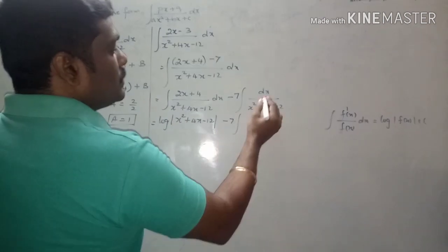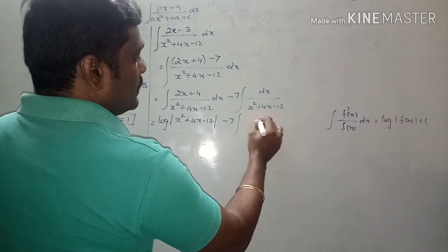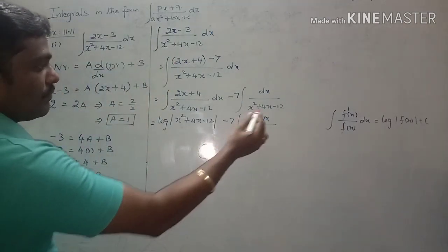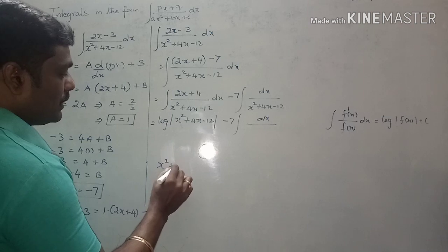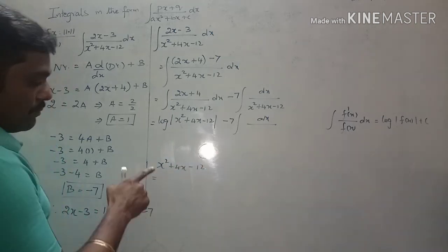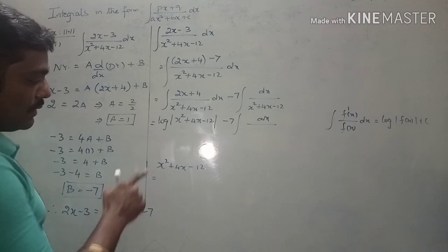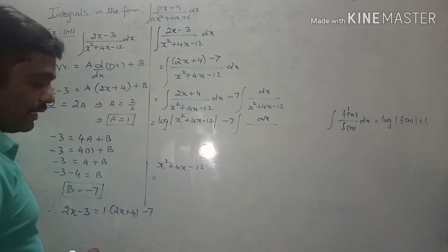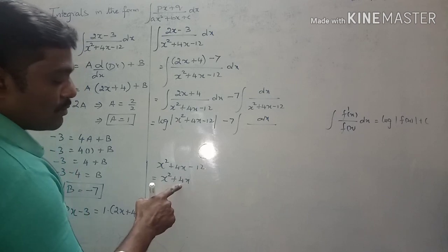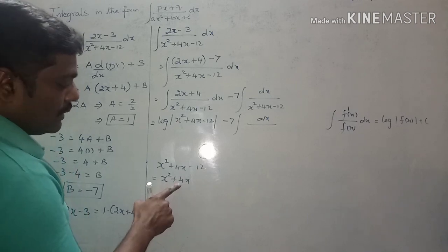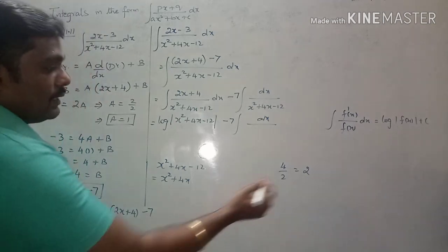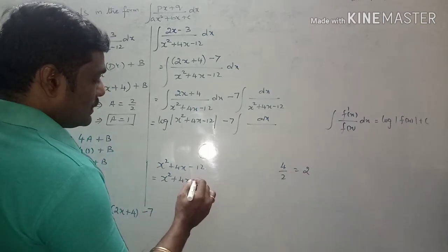For the second term, we want to use the completion of square method on the denominator. Step 1 of completion of square: take the x² coefficient as common — here it is 1, so nothing to take common. Step 2: always divide the x-coefficient by 2. Here the x-coefficient is 4; divided by 2 gives 2. Then add and subtract the square of 2.